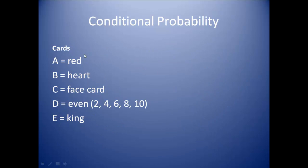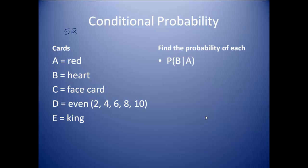We're going to try another set using cards. There are 52 cards in a deck, and the events are A, B, C, D, and E. The first thing to find is the probability of B given A. You should have ended up with 1 half. Because I know I have a red card, there are 13 hearts and 13 diamonds. My chance of getting a heart is 13 out of 26, which reduces down to 1 half.